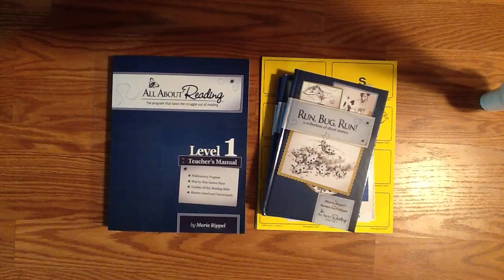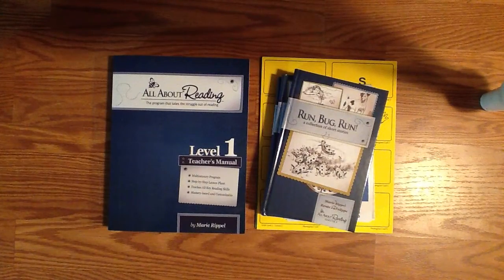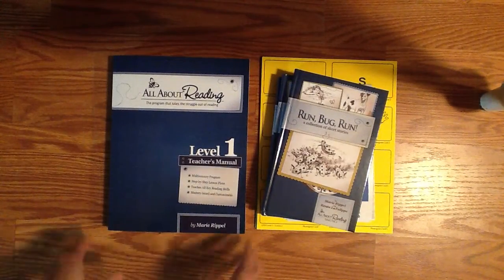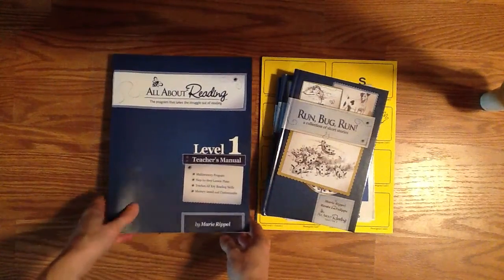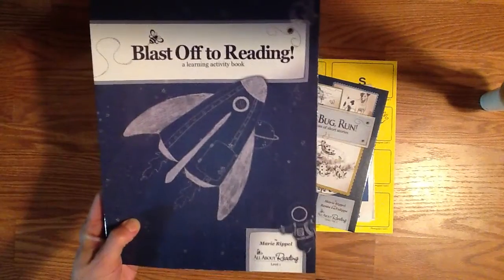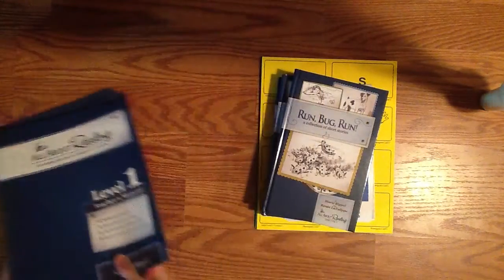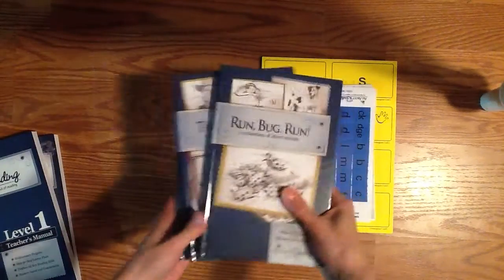Level one is what I have here and it is designed for first grade. So when you receive your All About Reading you'll receive a teacher's manual, a student learning activity book, your leveled readers,